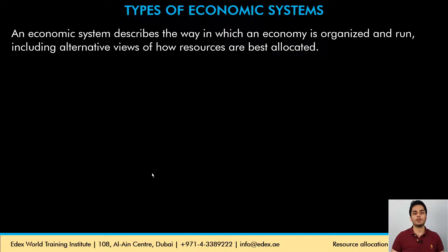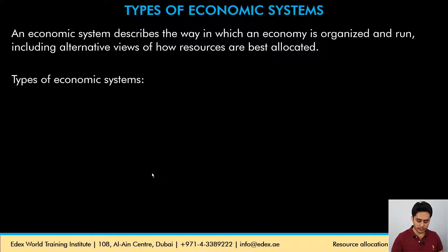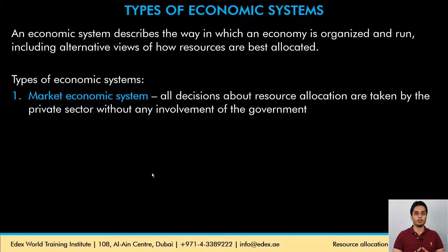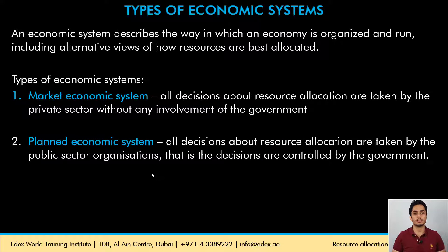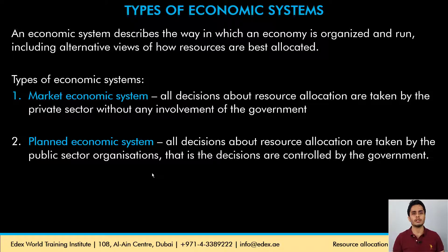An economic system describes the way in which the economy is run and organized — who owns the resources, who controls them, and how decisions regarding resource allocation are made. In a market economy, all resources are owned privately by individuals, decisions about resource allocation are made by private individuals, and there is no government interference. In a planned or command economic system, all decisions are taken by the government because the resources are also owned and controlled by the government.